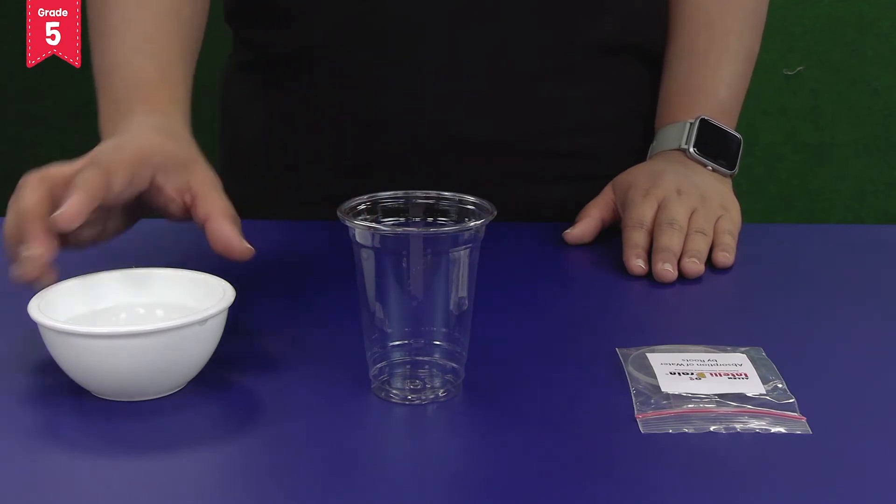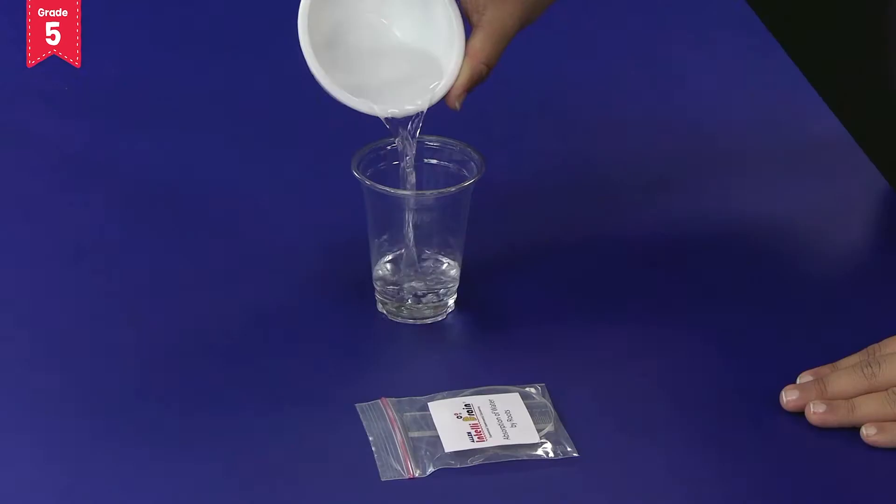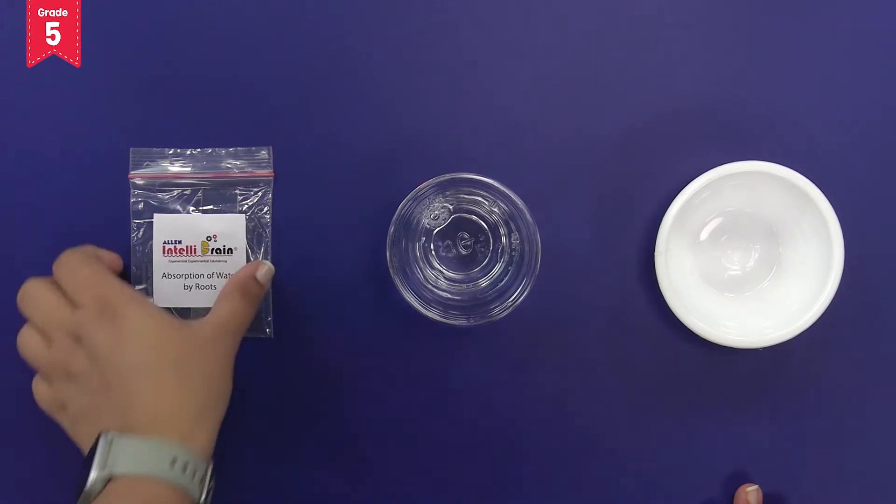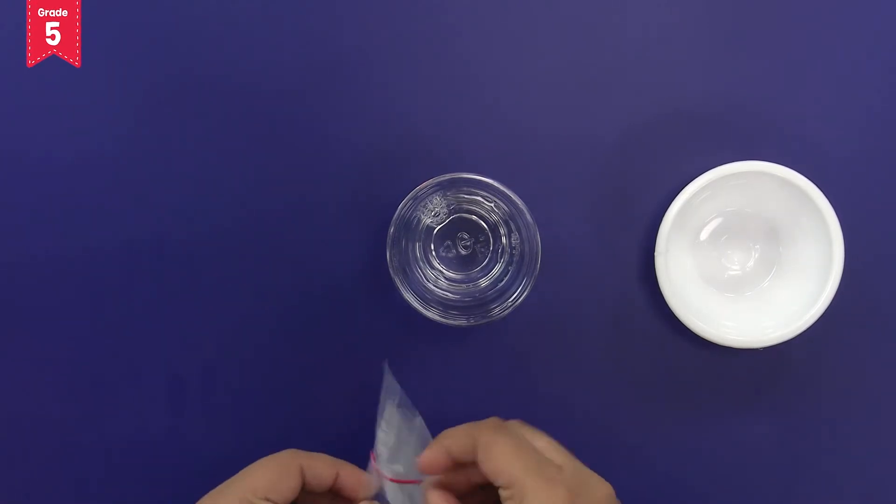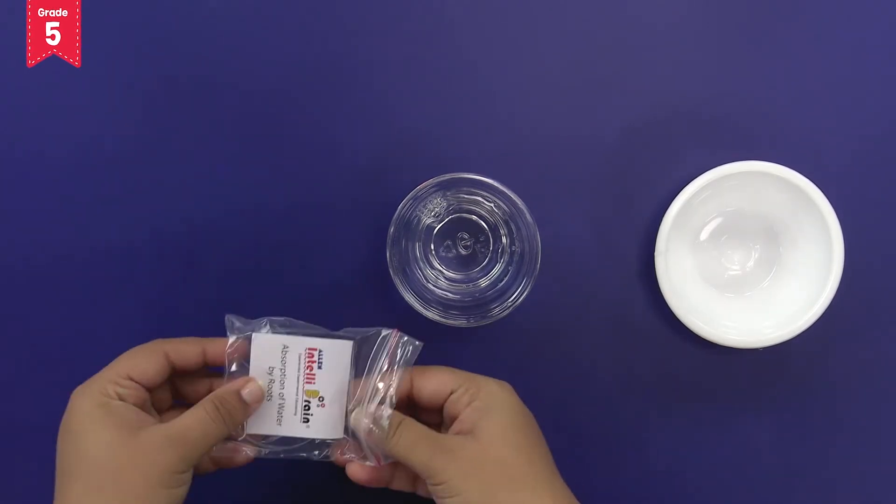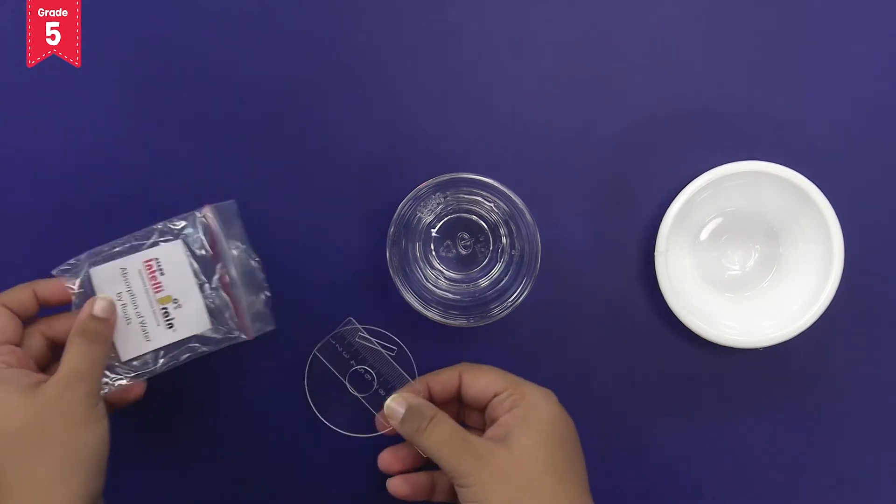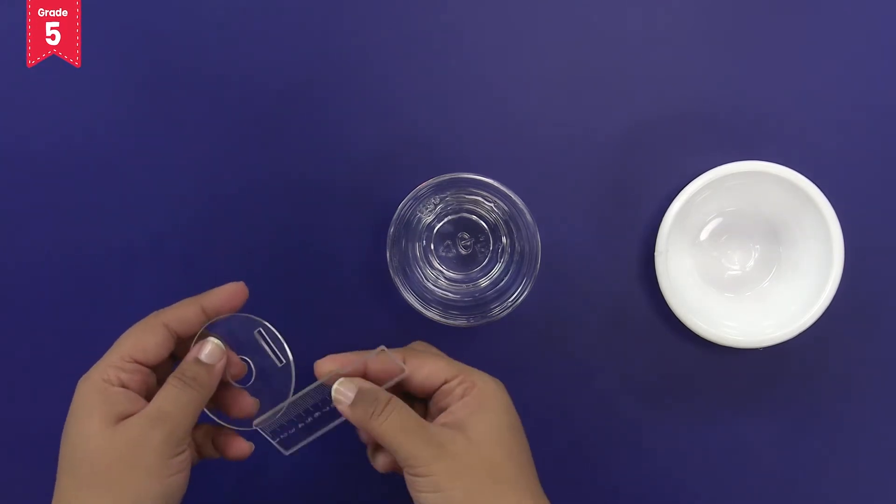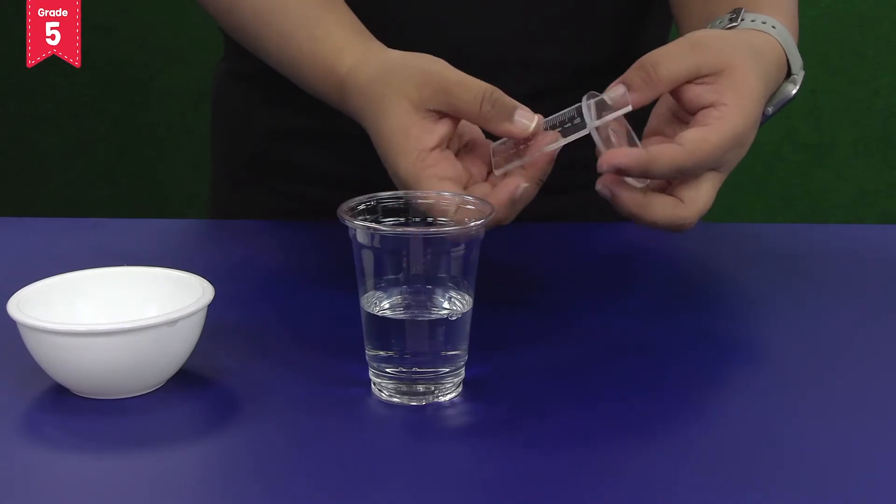Fill the glass with water. Now take out the plastic ring and the scale and insert the scale into this slot in the ring like this.